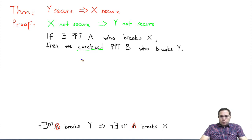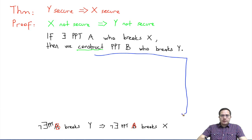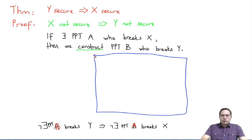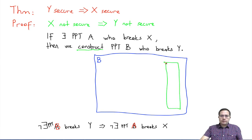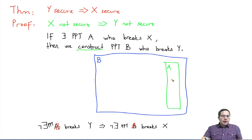The way these reduction proofs work will mostly be similar. We are going to construct an adversary B — let me draw a box for B. Within this box I'm going to write the pseudocode for B. B can use adversary A as a subroutine, so I can draw a box for A here, and B can call A.